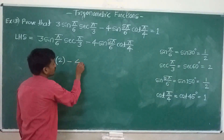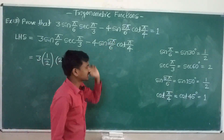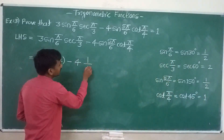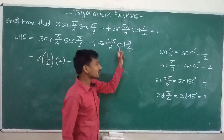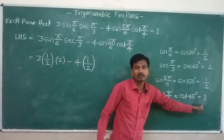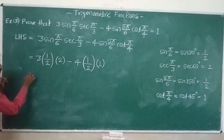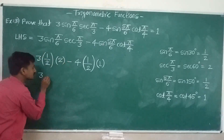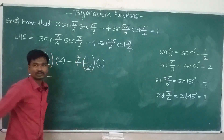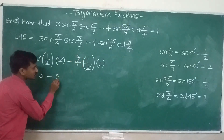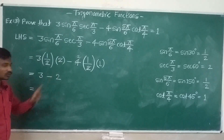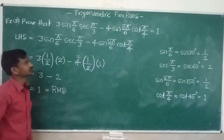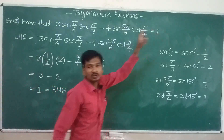Sin 5pi divided by 6 value is 1 divided by 2 — solved using allied angles. Cot pi divided by 4 is equal to 1. Substituting these four values in LHS: 3 into (1/2) into 2, minus 4 into (1/2) into 1. This gives 3 minus 2, which is equal to 1. So LHS equals RHS.